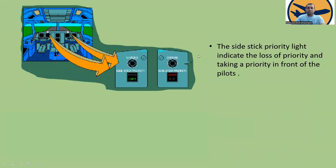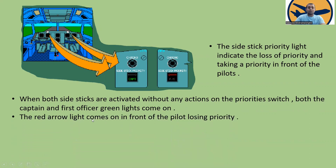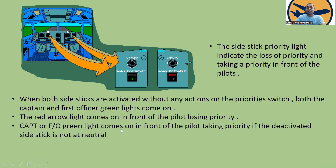The side stick priority light indicates loss of priority and taking of priority in front of the pilots. When both side sticks are activated without any action on the priority switch, both captain and first officer green lights come on. The red arrow light comes on in front of the pilot losing priority; green lights come on in front of the pilot taking priority if the deactivated side stick is not at neutral.